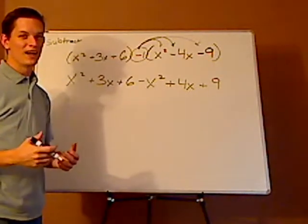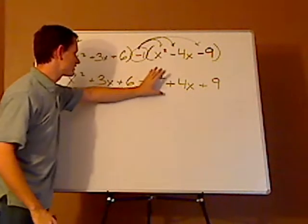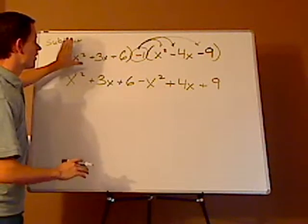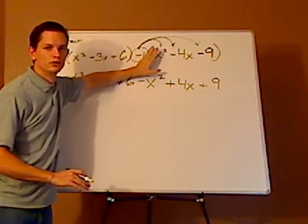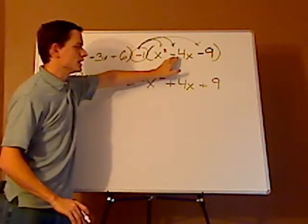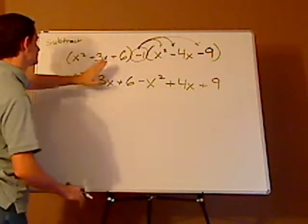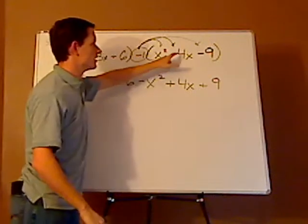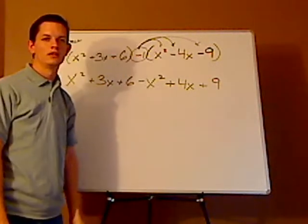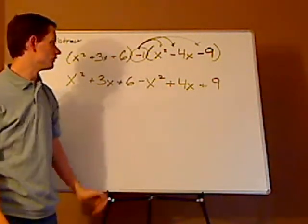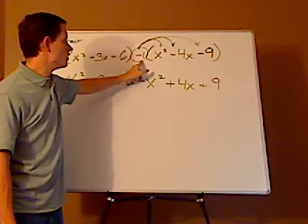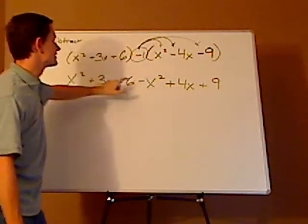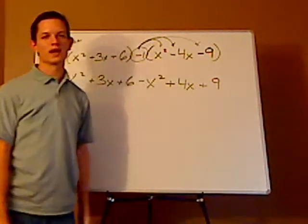And the reason why I'd recommend doing this is because our eyes have a tendency to jump. Especially when you have the negative sign, it gets a little tricky. For example, I see students do this. 3x minus 4x. But you're not doing that. Because you're subtracting. When you subtract, you have 3x minus a negative 4x.